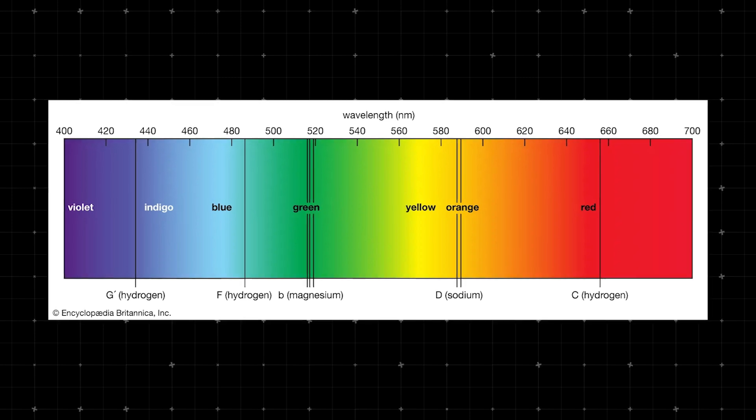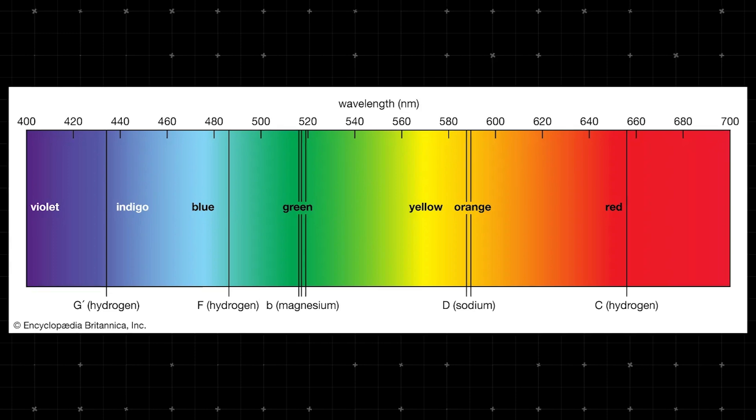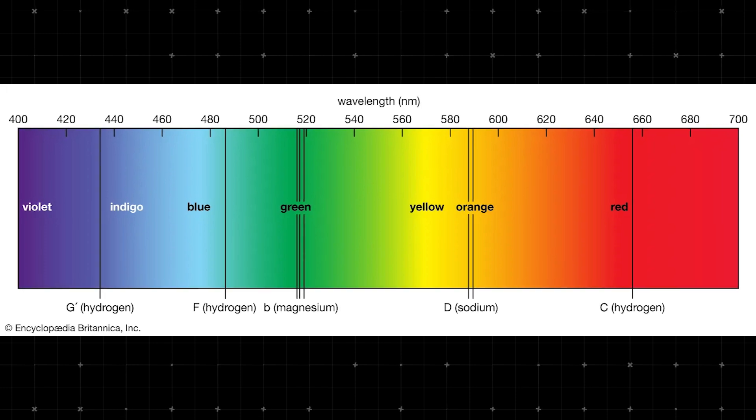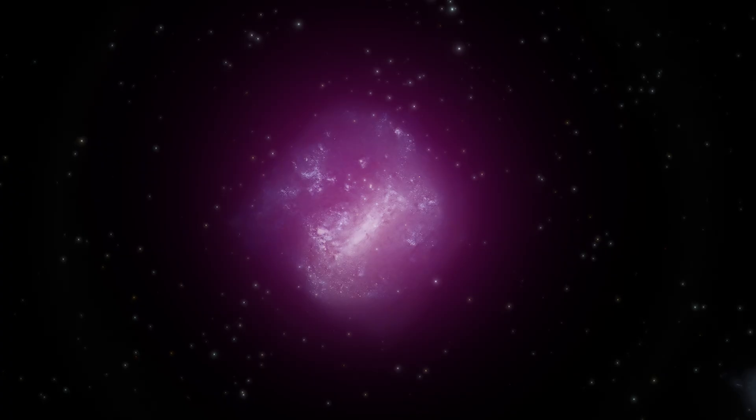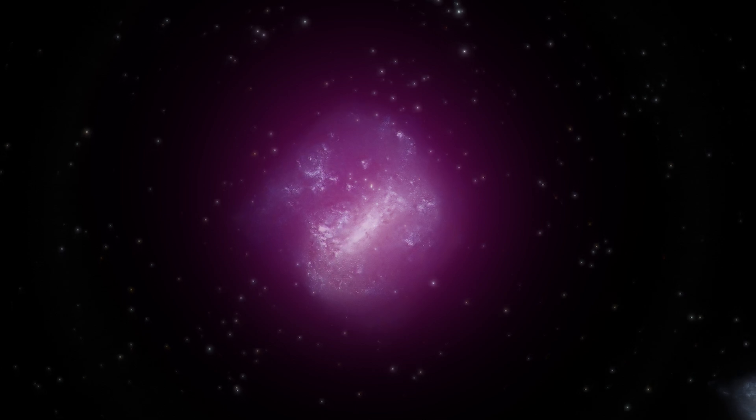Each chemical element absorbs light in its own unique way. It's like each type of gas has its own barcode. By reading these barcodes, scientists could determine not just what the gas was made of, but also how fast it was moving and how much of it was left.